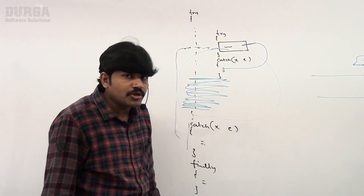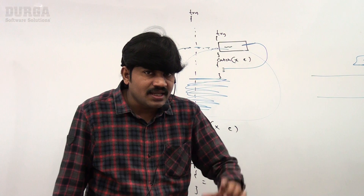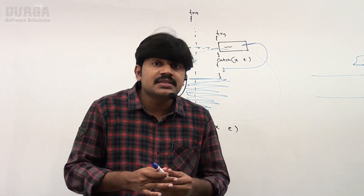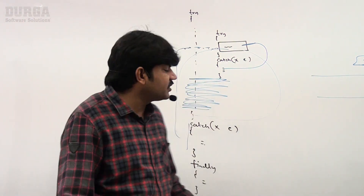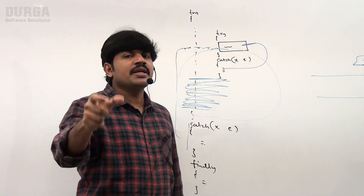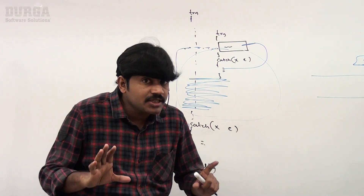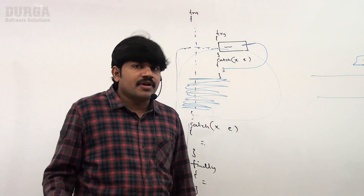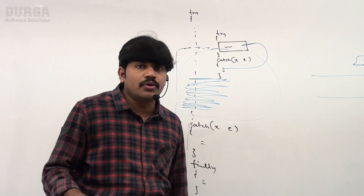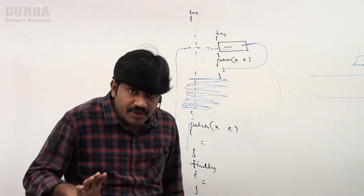So: is it possible to take try-catch-finally inside a try block? Yes. Inside a catch block? Yes. Inside finally also? Yes — nesting of try-catch-finally is always possible. If you feel comfortable, I will go for a small executable code so that you can get much clarity.